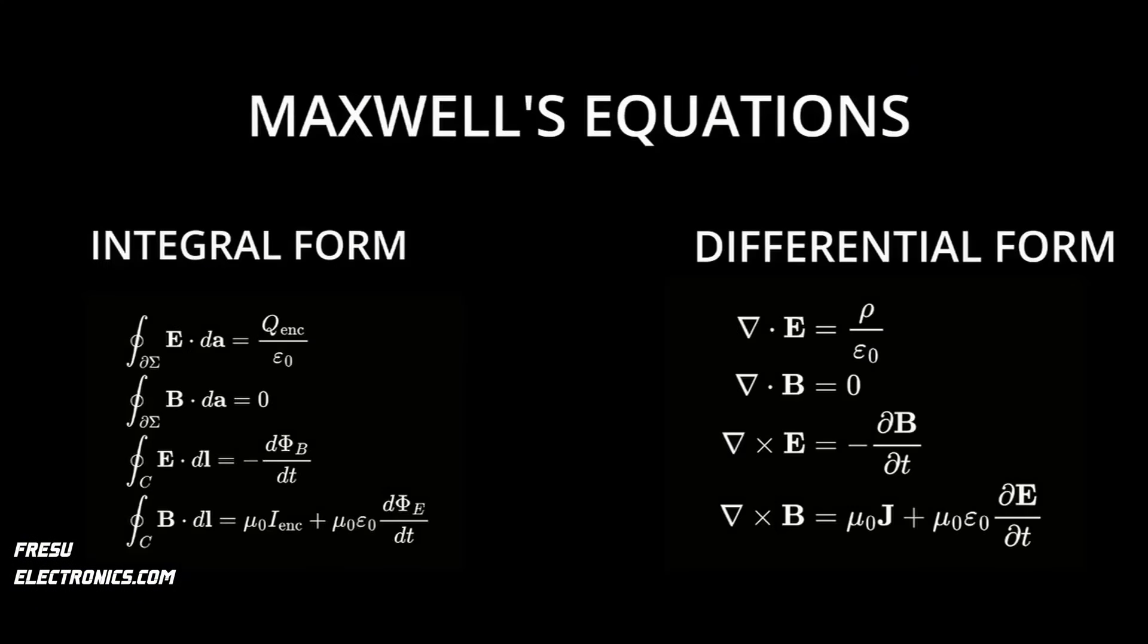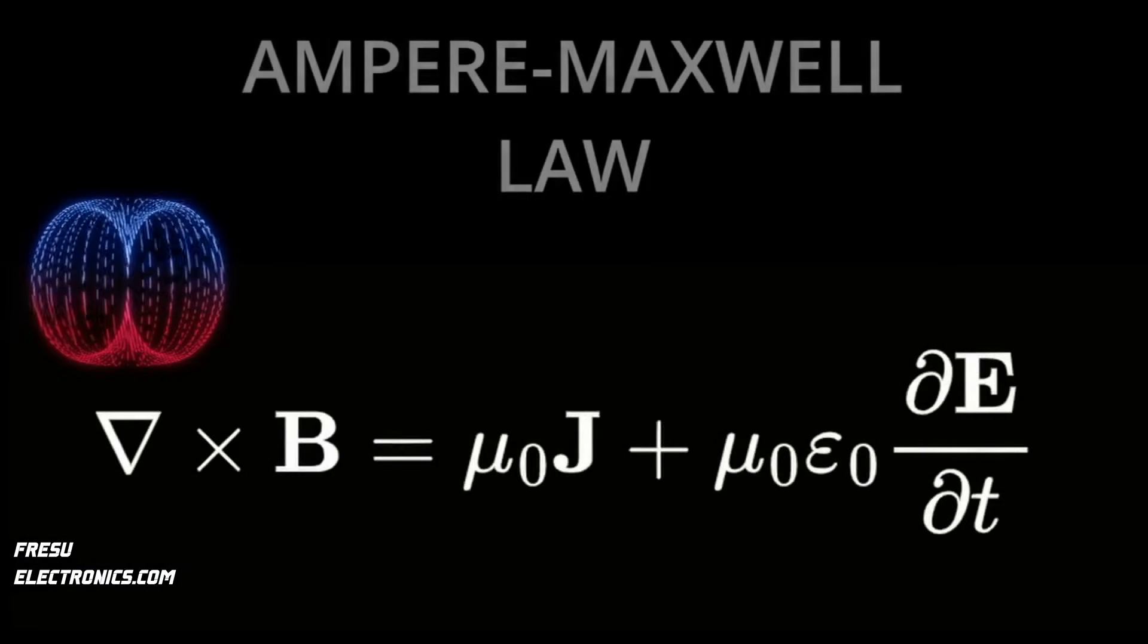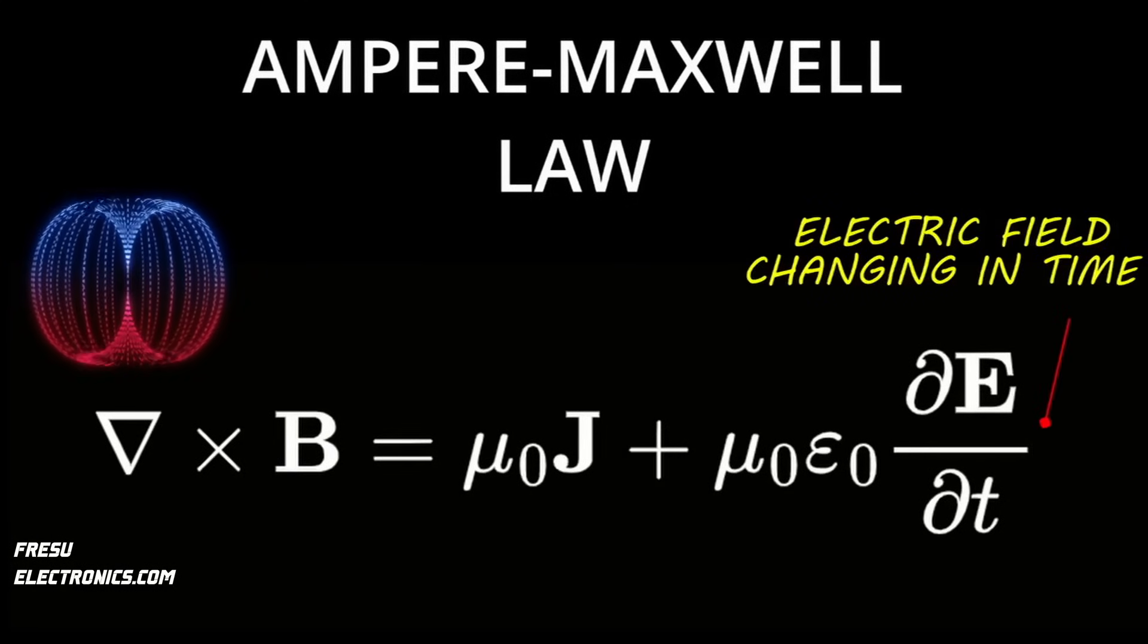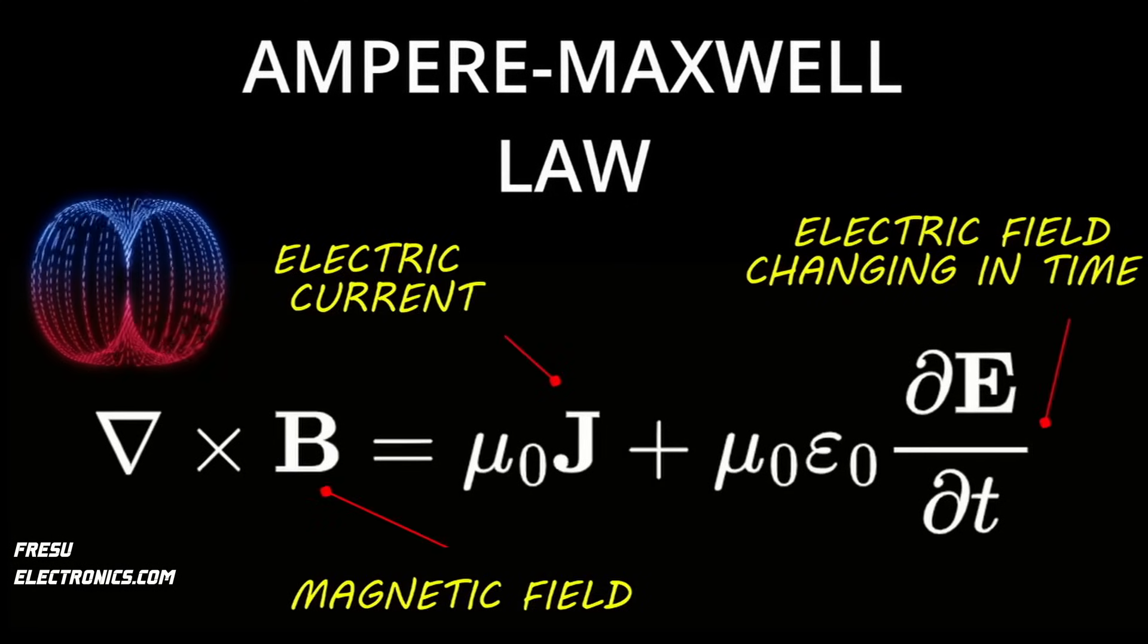Without delving deeply into the math, the key takeaway here is the fourth of Maxwell's equations, the Ampere-Maxwell law. This law tells us that a circulating magnetic field is produced by an electric current and by a time-varying electric field.